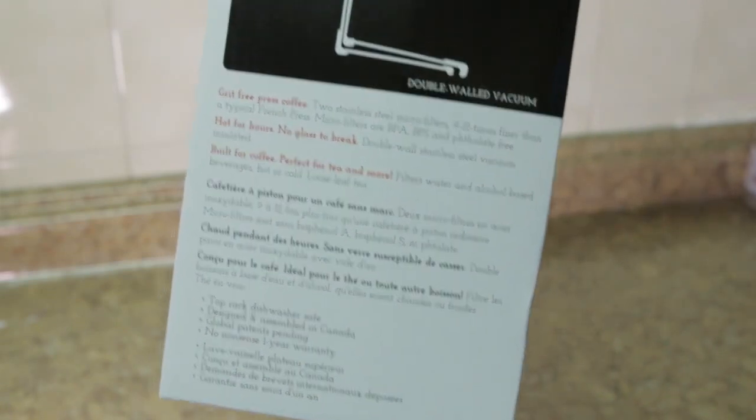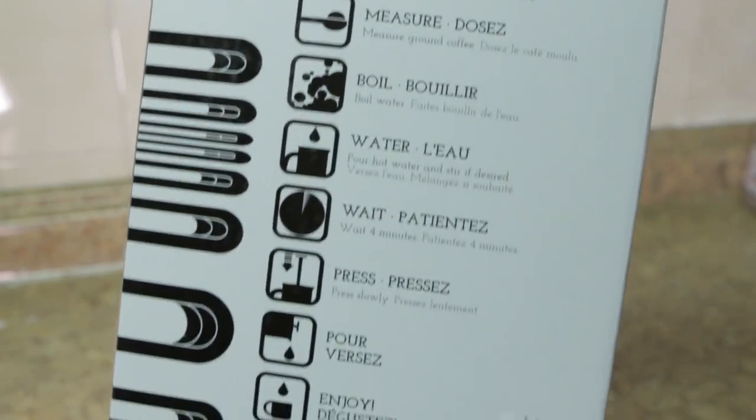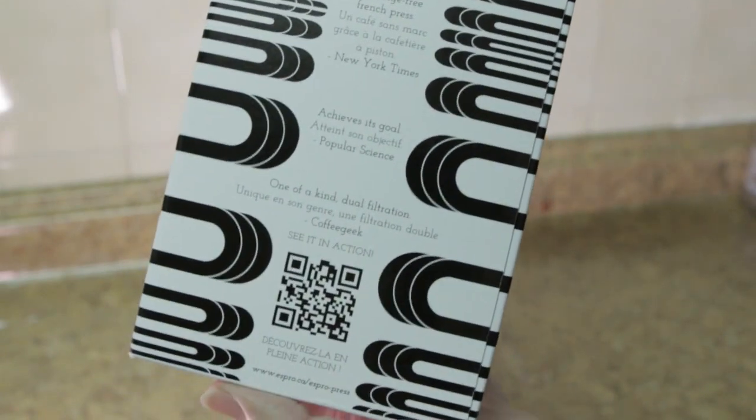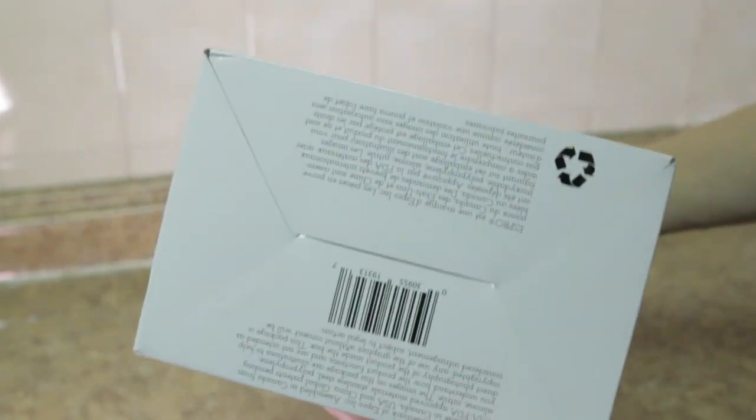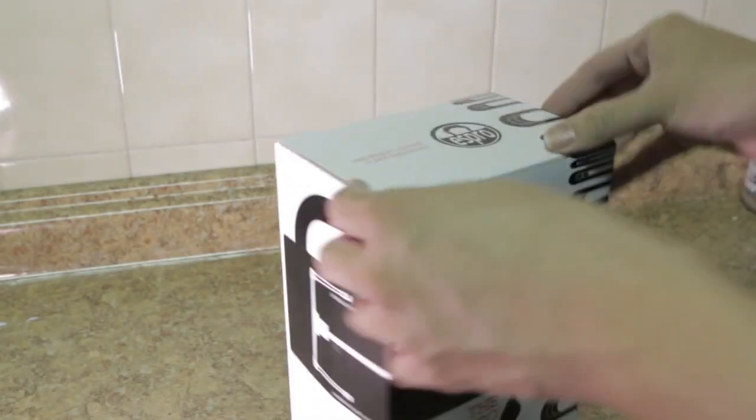What's special about this press is that it's stainless steel, insulated, double filtered for a clean cup. So on the outside you see some diagrams of the box. Let's take a look inside.